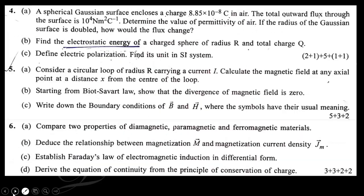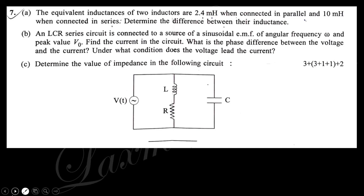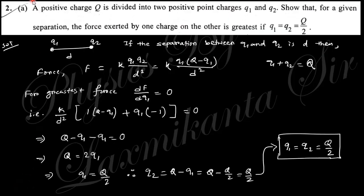The first question says: a positive charge Q is divided into two positive point charges q1 and q2, so q1 plus q2 equals capital Q, such that for a given separation the force exerted by the charges will be greatest. The answer is q1 equals q2 equals Q over 2. If you take the separation d, the force will be as shown.